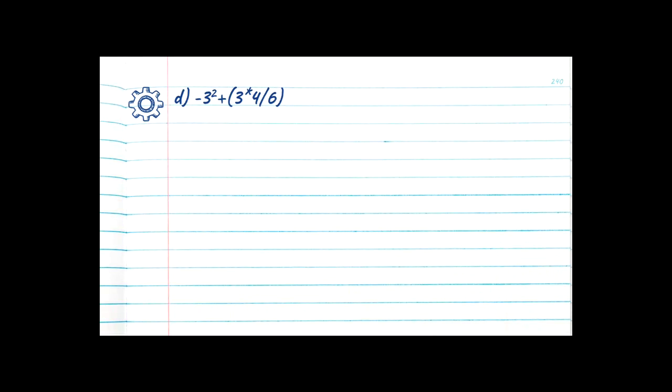Let's look at example D. Again looking for brackets — we have minus 3 to the power of 2 plus an opening bracket, so we start over. Are there any more brackets? 3 times 4 divided by 6, closing bracket — we found the innermost bracket. Are there any exponents within? No. So we move to step 3: division and multiplication in the order they appear. 3 times 4 is 12, drop the rest. Now 12 divided by 6 is equal to 2, and again drop the rest of the equation.